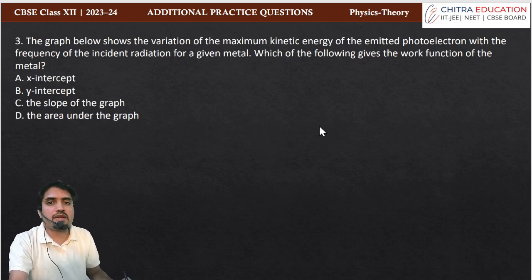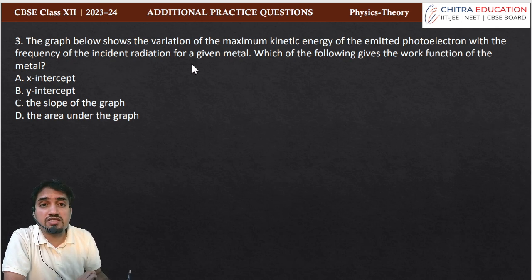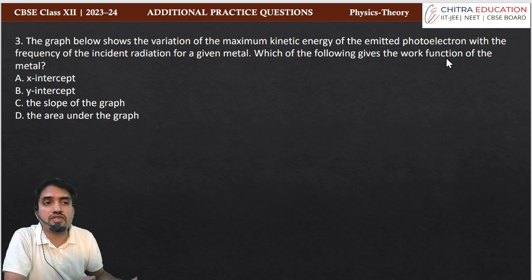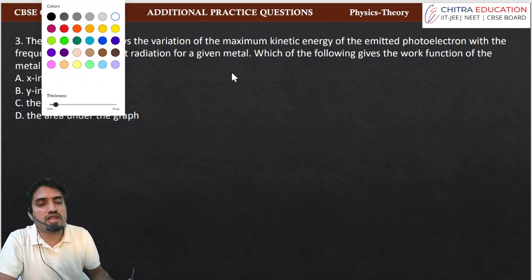Next, third question is: The graph below shows the variation of maximum kinetic energy of emitted photoelectron with frequency of incident radiation for a given metal. Which of the following gives the work function of metal? Here we have a graph plot and need to determine what information it provides.